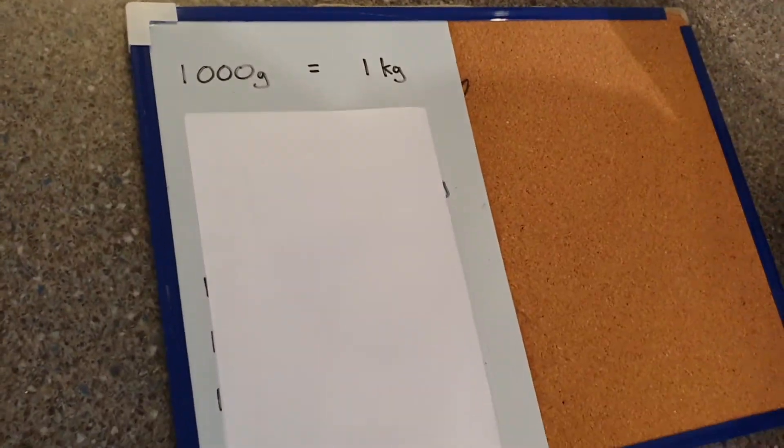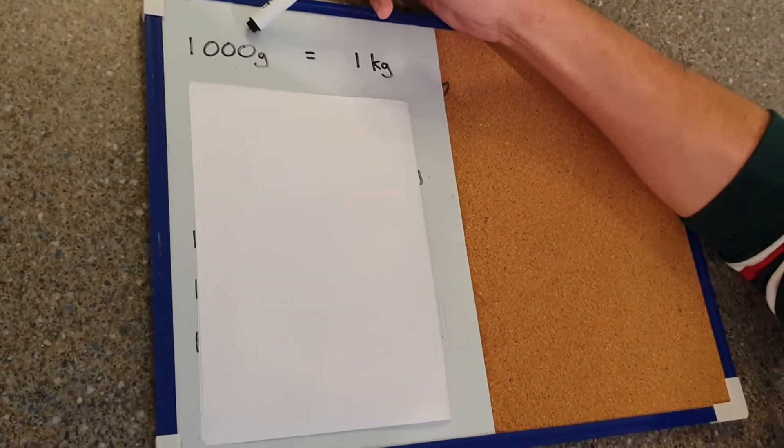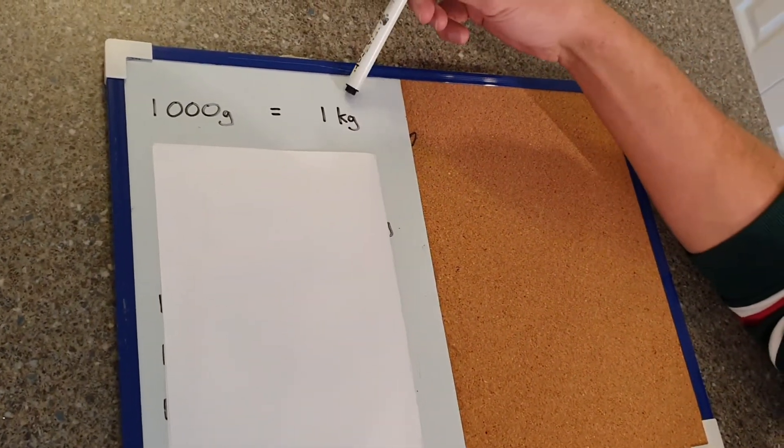So first of all, if we're looking at weight or mass, we have 1000 grams and that is equal to 1 kilogram.